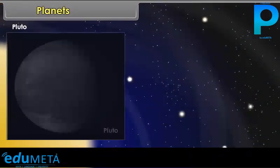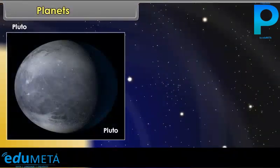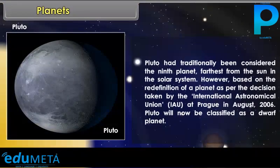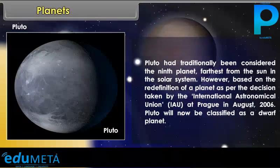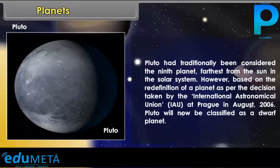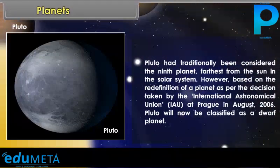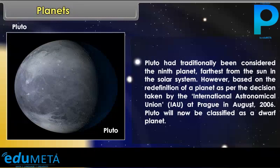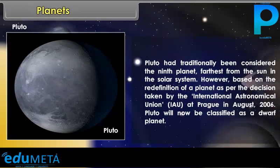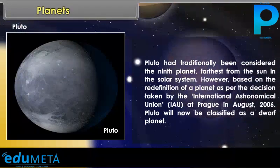Pluto had traditionally been considered the ninth planet, farthest from the Sun in the solar system. However, based on the redefinition of a planet, as per the decision taken by the International Astronomical Union (IAU) at Prague in August 2006, Pluto is now classified as a dwarf planet.